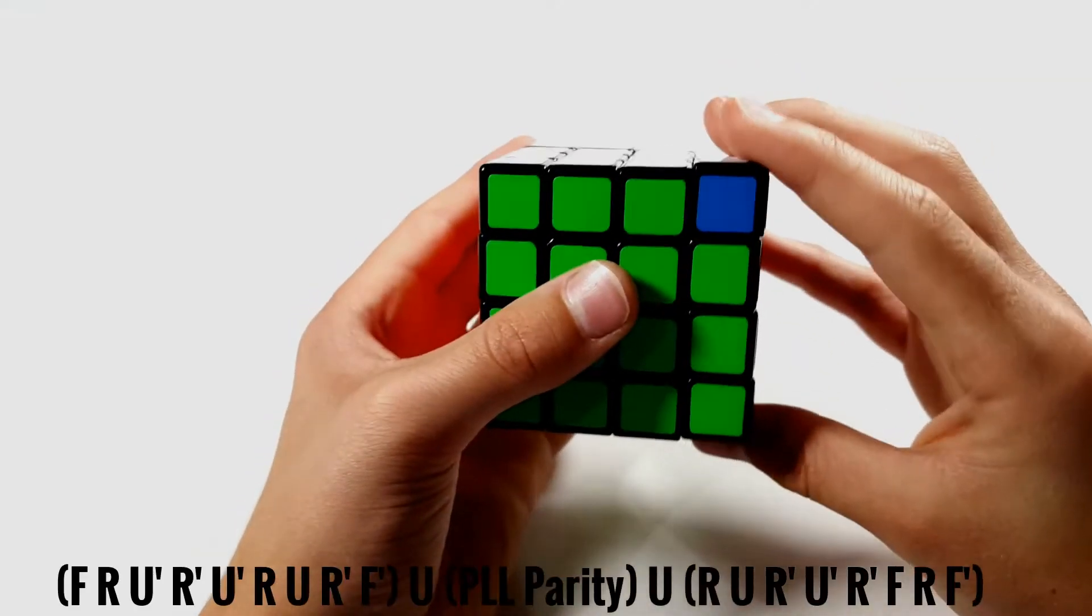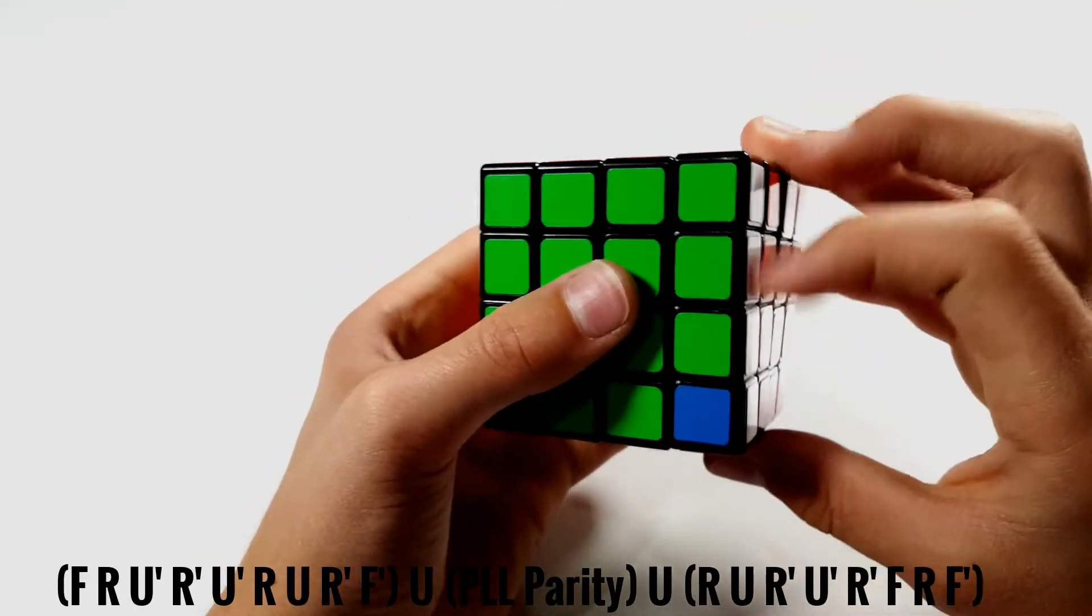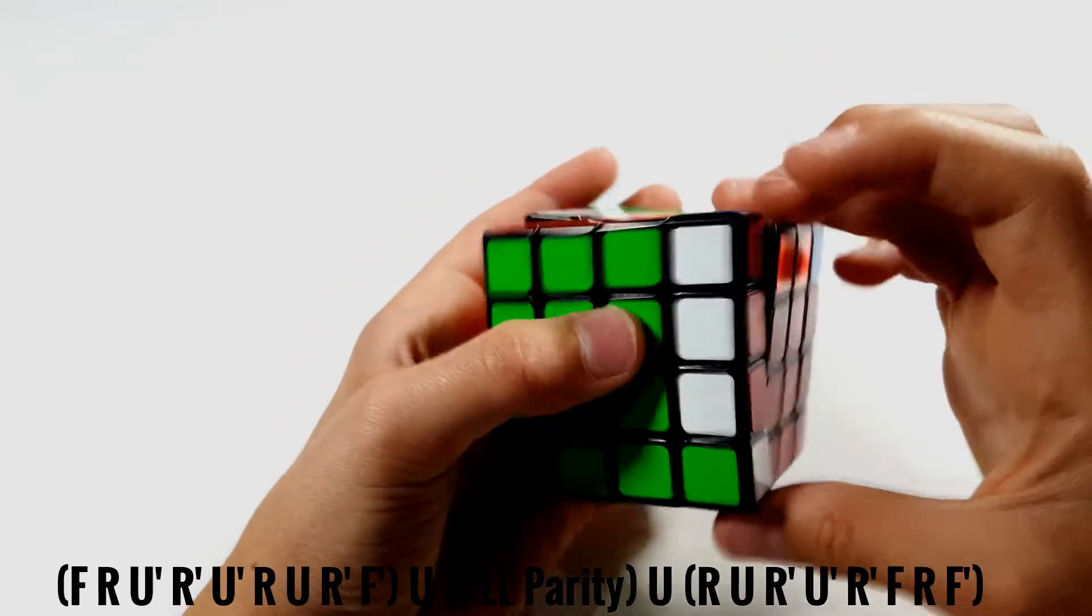So to start the algorithm, you do the start of the Y perm, which is F, R, U prime, R prime, U prime, R, U, R prime, F prime.